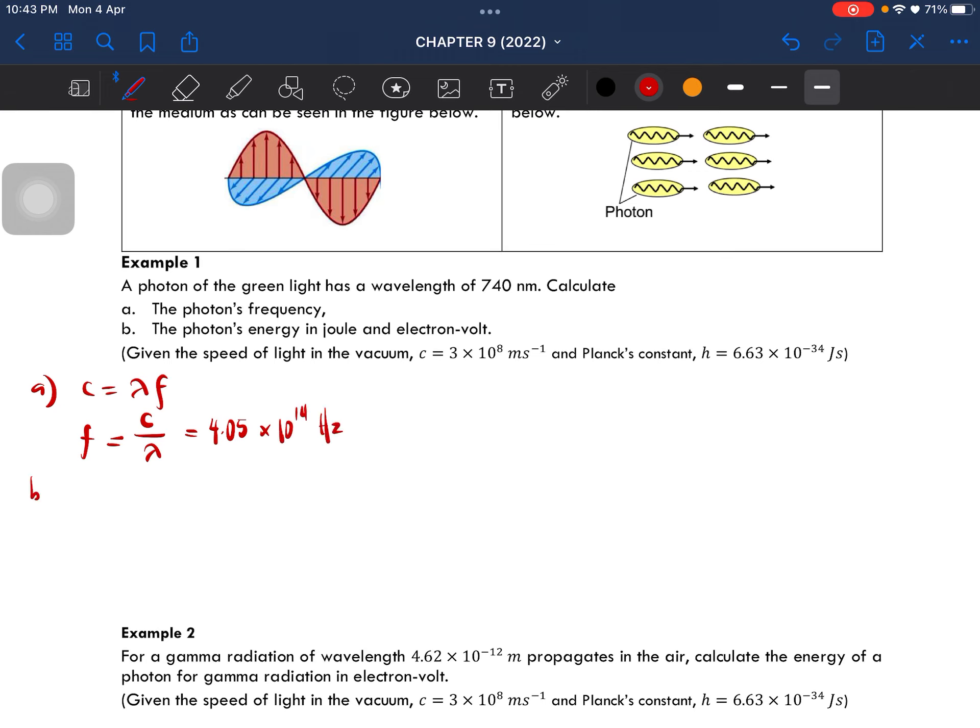Then the second one, the energy is just E equal to hf. And then for this one, just substitute the values and then you will get 2.69 times 10 negative 19 joules.